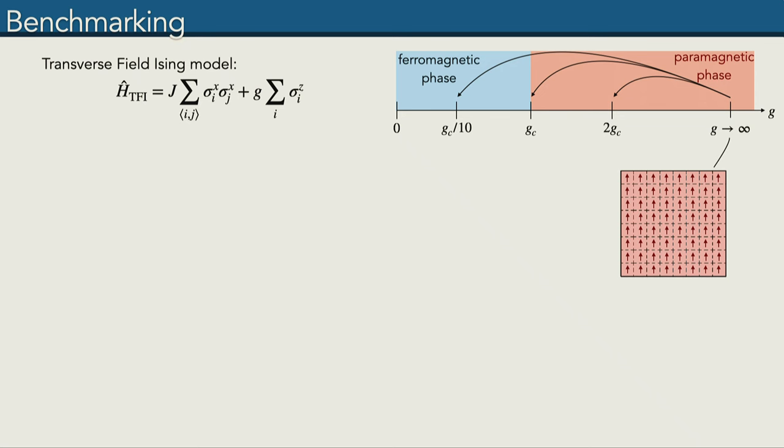Having introduced the method, we will go to the benchmarking part, where we'll hopefully convince you that our method can work in doing dynamics in two dimensions. We will look at the transverse field Ising model, which you can see here, and we will start with an initial state that is fully transversely polarized. We are deep in this paramagnetic phase, and now we will look at three different quenches.